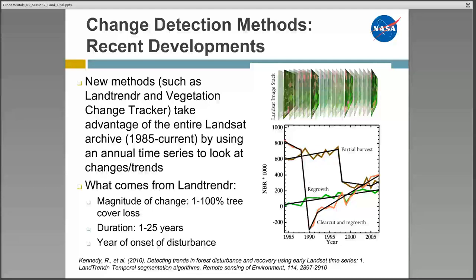Recent developments in change detection take advantage of the entire freely available Landsat Archive by using monthly or annual time series to look at changes or trends. While previously described methods use only two image dates, this method could use 20 or 30 image dates, allowing the capture of short-duration disturbance events as well as long-term disturbance trends. This approach recognizes that change is not simply a comparison between two points in time, but rather a continual process operating at both fast and slow rates on the landscape. An example is LandTrendr, developed by Kennedy et al. at Oregon State University. The results include the magnitude of change identifying percent tree cover loss, the duration of the disturbance, and the year of onset.